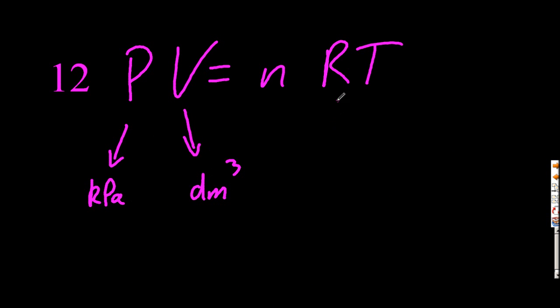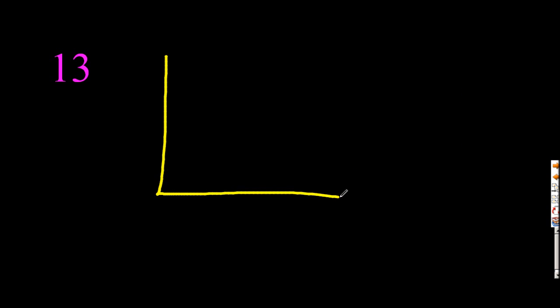PV equals NRT. Pressure's got to be in kilopascals. They might give it to you in pascals. Temperature's got to be in Kelvin. Pressure versus volume is not a straight line. Pressure versus volume is a curved line.